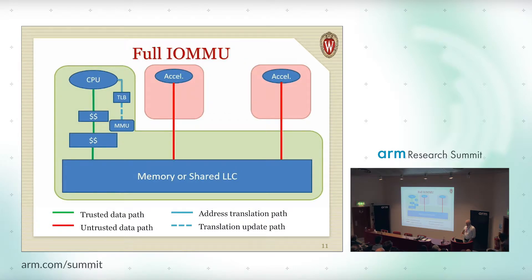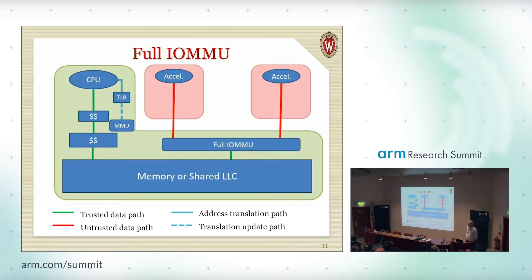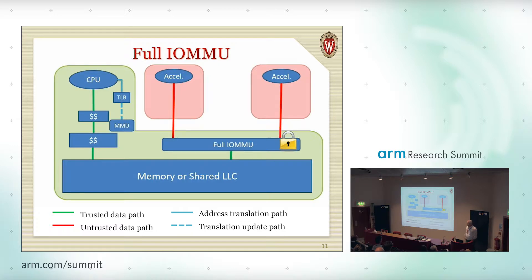A conventional way to do this is what we call full IOMMU. We're going to interpose an IOMMU translation device — these were created for I/O systems. Every address generated by the accelerator will be translated to a physical address before it's passed on to the rest of the memory system, thereby checking the page permissions. This works completely well — you get a completely safe system — but it's completely slow because IOMMUs are neither designed for low latency nor high bandwidth. If you wanted to run all the translations for a graphics accelerator through your IOMMU, good luck.